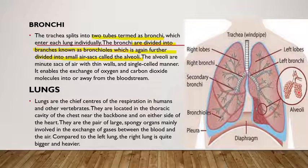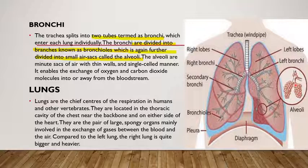A good way to remember the structure: the alveoli are like small ball-shaped sacs, and the bronchi and bronchioles are like the branches — similar to an onion with its layers.